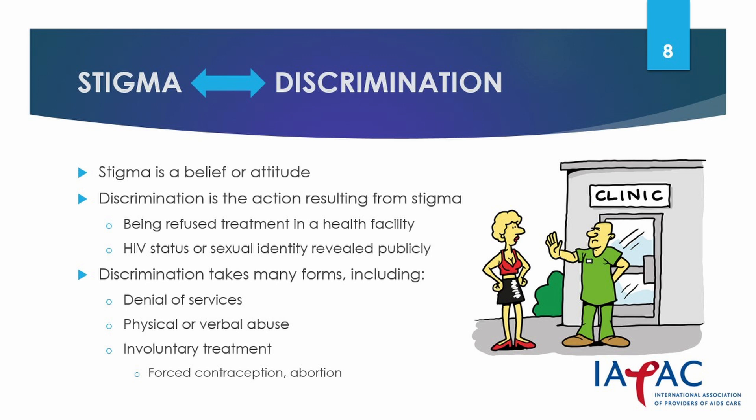People living with HIV may be refused treatment in a health facility because of their HIV status, or because they belong to highly stigmatized key populations such as people who inject drugs. A patient's HIV status or sexual identity may be revealed publicly in violation of their right to confidentiality. Discrimination also takes the form of physical or verbal abuse or voluntary or coercive treatments such as forced contraception or abortion.